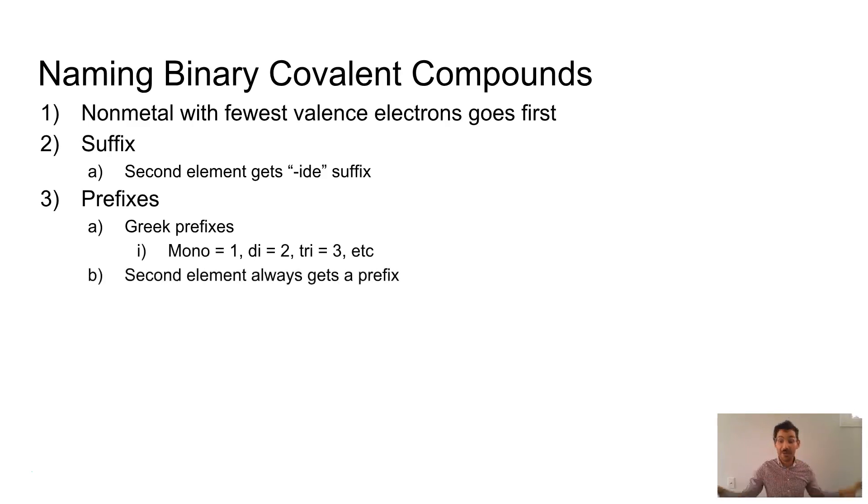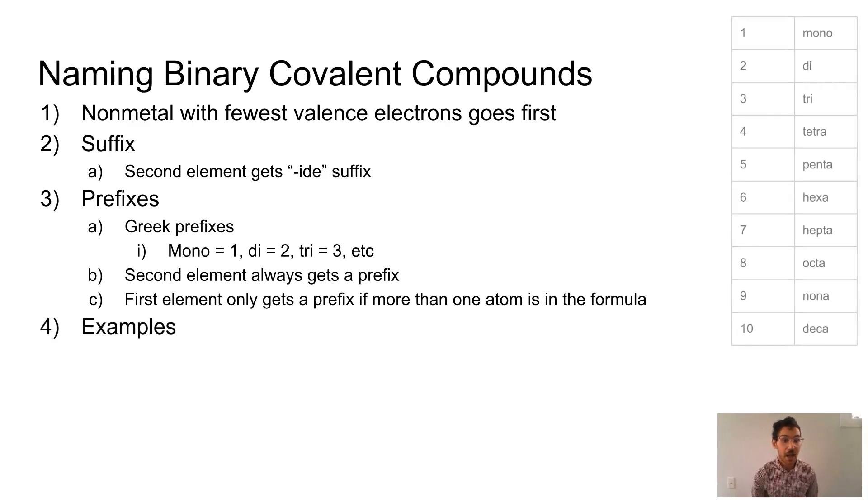But the second element is always, always, always going to get a prefix put on it. The first element only gets a prefix if there's more than one. So if you have two, three, four as your subscript on your first element, you will use a Greek prefix. If there's no subscript, no prefix. So let's look at some examples here. If, oh, there's that beautiful table. Mono, di, tri, tetra, penta, hexa, hepta, octa, nona, deca. They keep going after that. These are the ones that we're going to worry about. So, why don't you, based on these rules, pause the video and try naming these guys. Cool. Pause the video and tried it. Well, we'll go through two, one or two, and then you try again, if you goofed up.